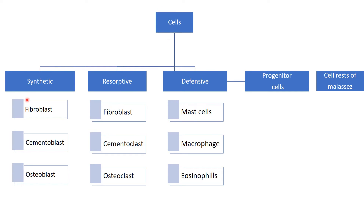Under the cells, we have synthetic cells, resorptive cells, defensive cells, progenitor cells, and the cell rests. Under the synthetic cells, we have three types — those which help in synthesis: the fibroblast, the cementoblast, and the osteoblast.